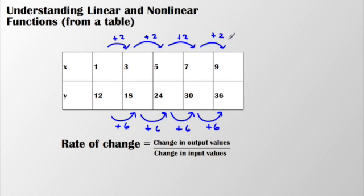I can see that the change in output values over the change in the input values is always 6 divided by 2, which is 3. Because that has a constant rate of change, I can see that it's a linear function.